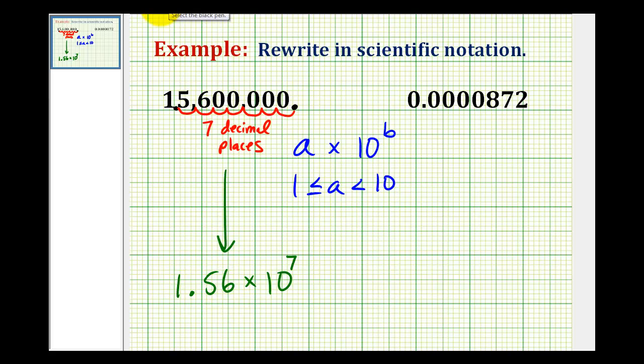Now let's convert a small number to scientific notation. Again, the first step is to determine where the decimal point would have to be in order to satisfy this condition here for A. So the decimal point would have to move from here all the way to here to make 8.72.